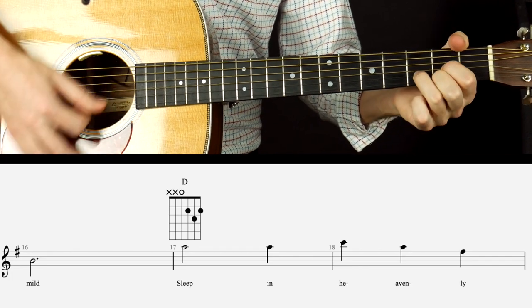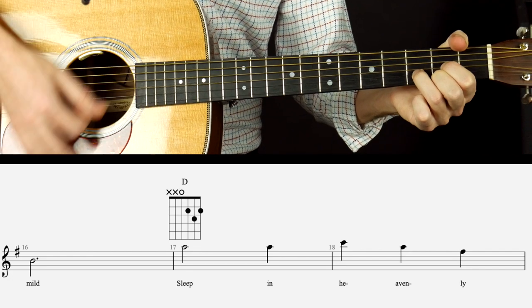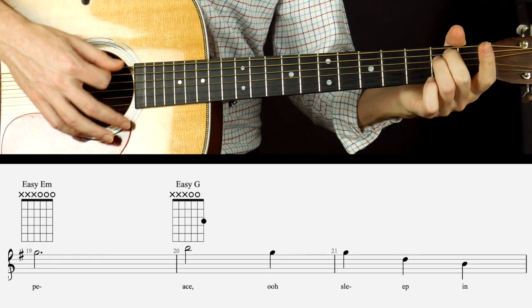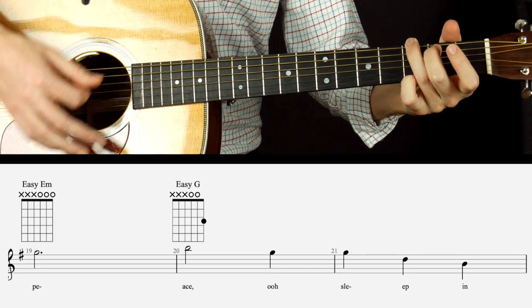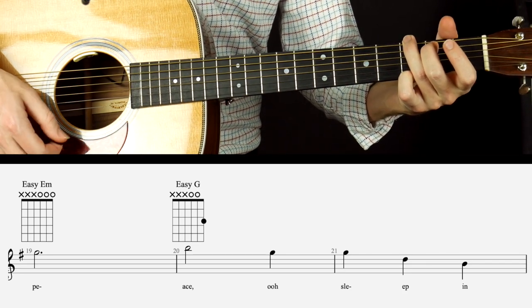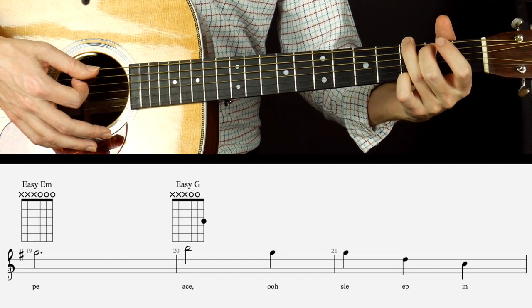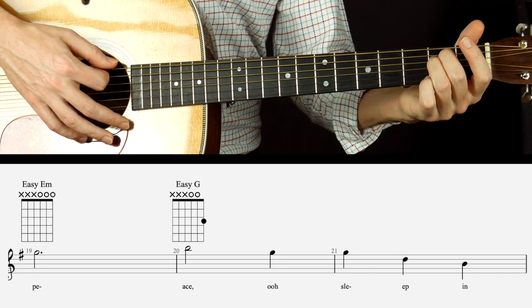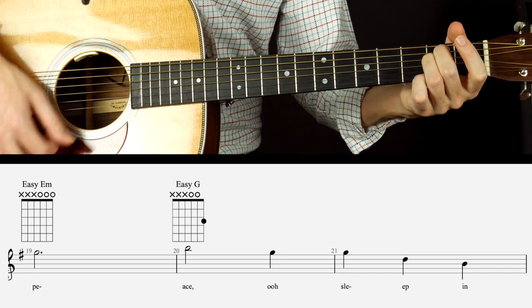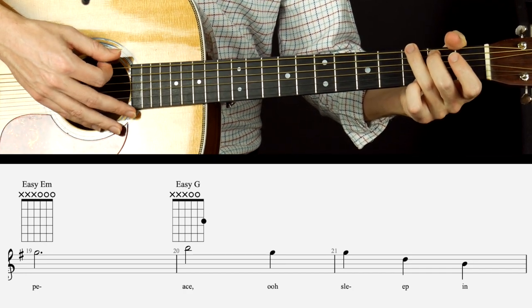Two measures on the D. Sleep in heavenly. One measure on the E minor. One, two, three. Then to the G. Peace. So that is the one little tricky part there, is on a piece, we split it between E minor. Peace. Peace. To G. Peace. Then stay on the G for another measure.